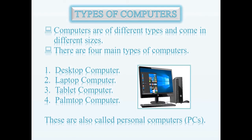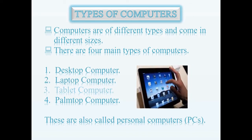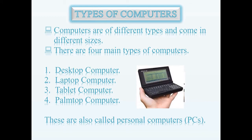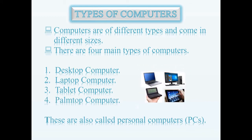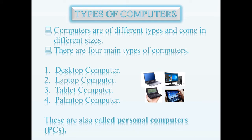The third topic is types of computers. Computers are of different types and come in different sizes. There are four types of computer: number one, desktop computer; second, laptop computer; third, tablet computer; and four, palm top computer. These computers are also called personal computers or PCs. They are personal because they can only be used by one person at a time.